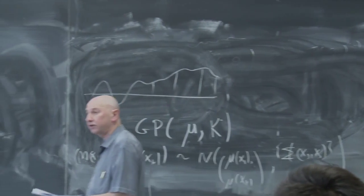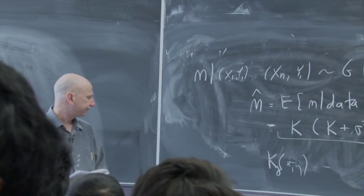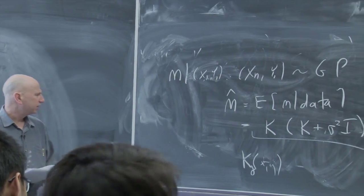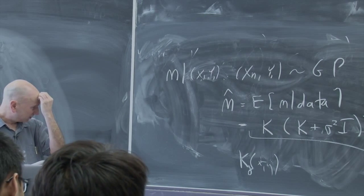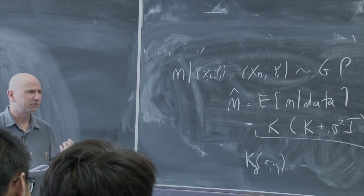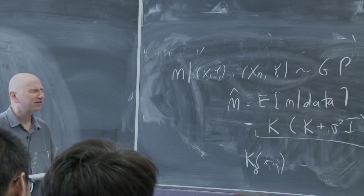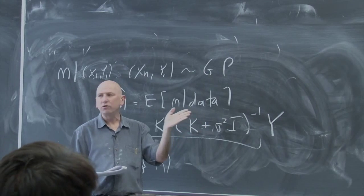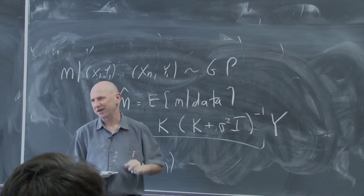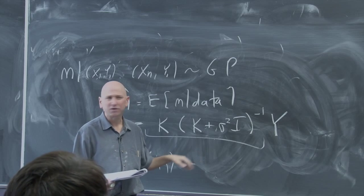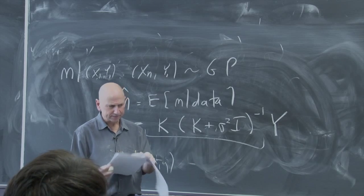There's a slight complication: you haven't just specified a bandwidth — there's a whole function K to specify, and there are families like the Matérn functions with their own parameters gamma. Papers by Zoubin Ghahramani show pictures of what typical draws from the prior look like as you vary these parameters, controlling your prior beliefs about the smoothness of m. So it's very similar to the linear smoothers we've already talked about, but with more parameters to specify — though it does give a well-defined posterior distribution.